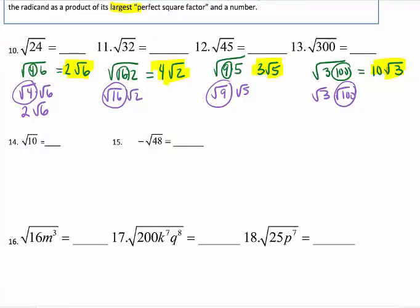Looking at number fourteen and fifteen, go ahead and pause and see if you can do both of those. Square root of ten. There is no perfect squares in this one. That is simplified. Remember they like to throw these at you every once in a while in your homework because it's generating from the computer. But I do want to stress that on the test you will not have any that something is not able to be done to it.